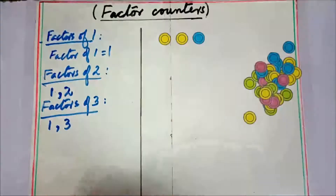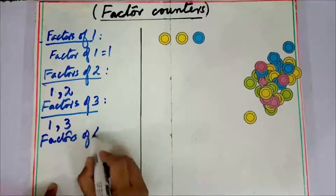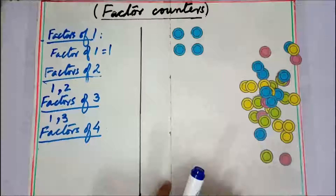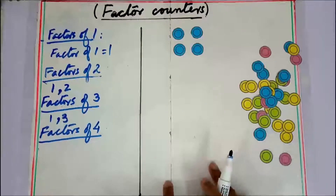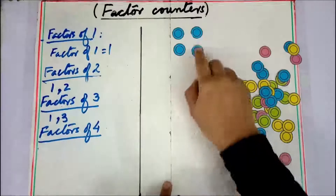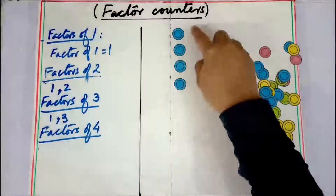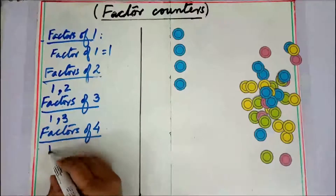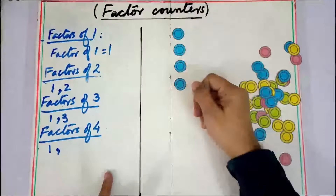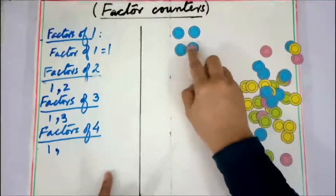Now we are going to find the factors of four, so we take four counters. First, can we divide into groups of one? Yes, we can divide evenly into groups of one, so one is a factor of four. Now I divide the counters into groups of two — there is no remainder, so two is also a factor of four.